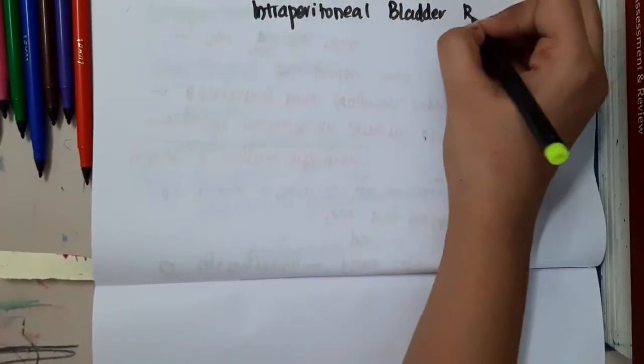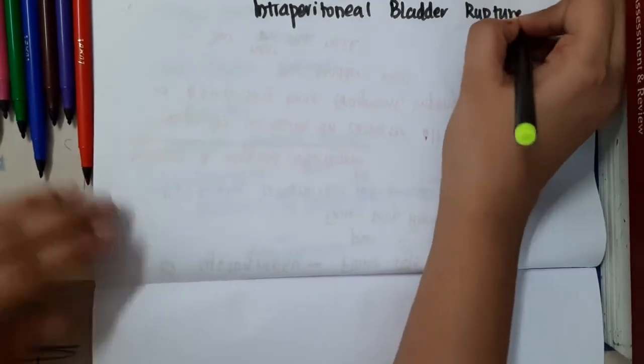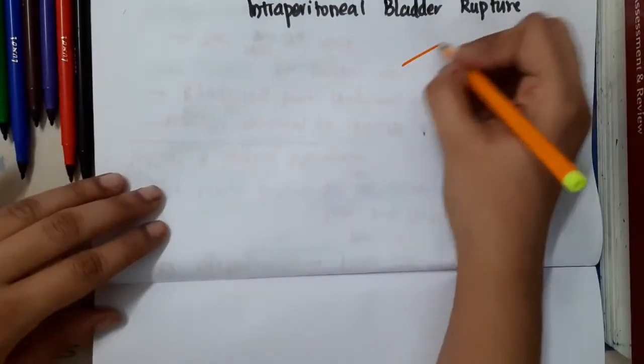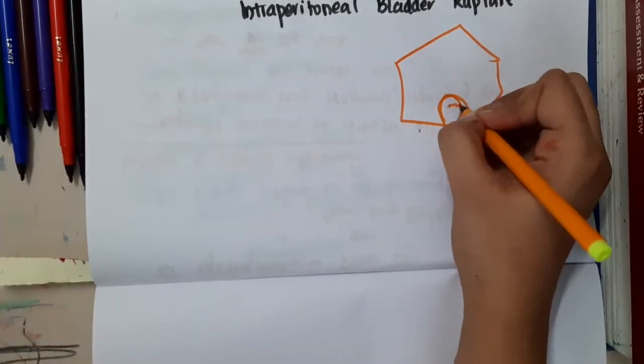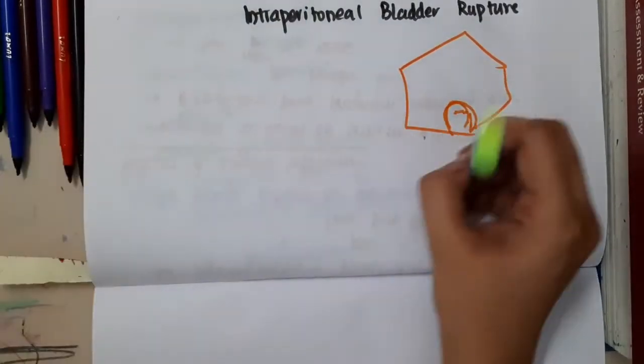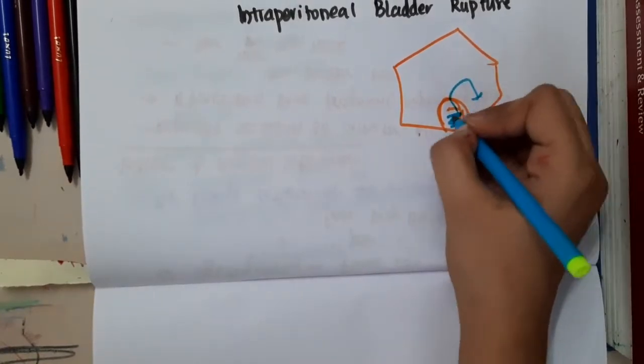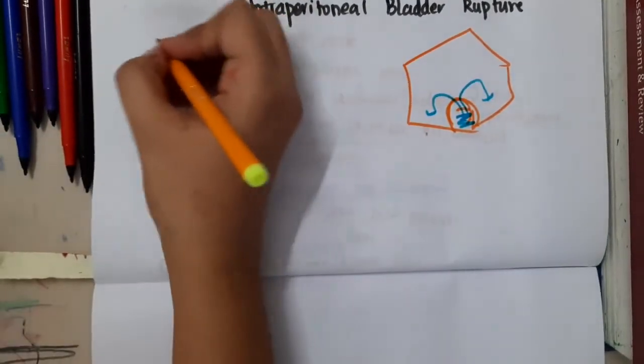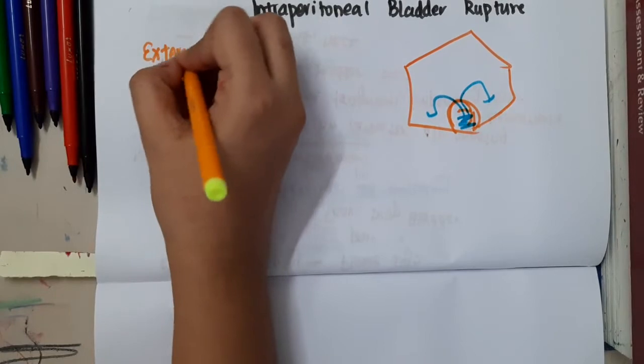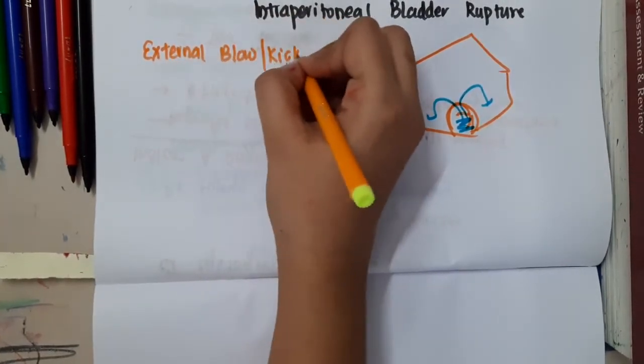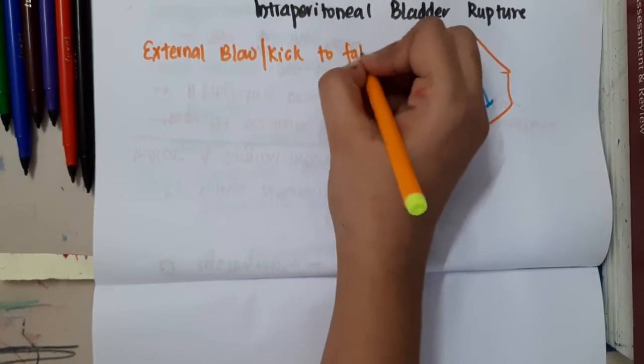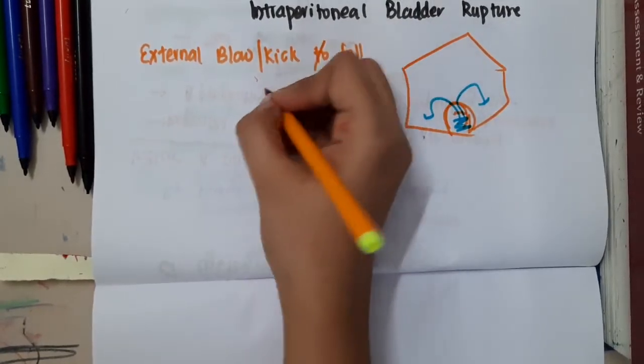In the intraperitoneal bladder rupture, if this is the abdomen and this is the urinary bladder, there is a blow here. As a result, the urine which is present will extravasate into the abdominal cavity. This occurs due to external blow or kick or fall on the bladder.